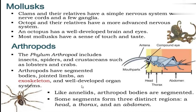Next is Arthropoda — insects, spiders, crustaceans, lobsters, crabs. Insects have a segmented body, jointed limbs, exoskeleton, and well-developed organ systems. Examples: cockroach, spiders. The insect body is segmented into head, thorax, and abdomen. They have compound eyes and antennae to sense the environment.